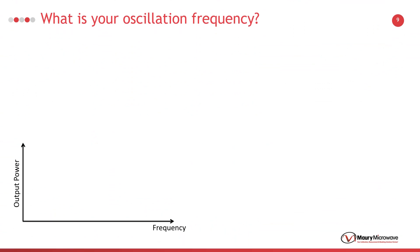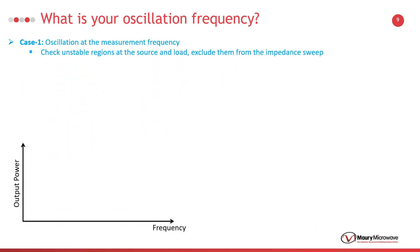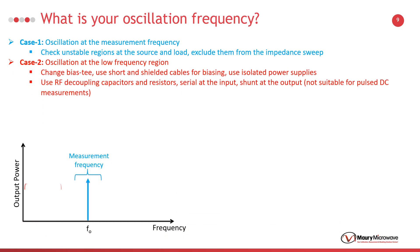If your DUT is oscillating and you know the oscillation frequency, we have some recommendations that may fix your problem. The first case is oscillations at your measurement frequency. In this case, you might be performing source pull or load pull in the unstable region of your DUT. An S-parameter measurement before the load pull measurements can be used to understand unstable regions. Then you can exclude these impedance values from your impedance sweep. The second case is low frequency oscillations, which means up to a few hundred megahertz. These oscillations are usually caused by the biasing networks. As a fast solution, you can check your biasing networks, change bias tees, and use additional resistors and capacitors on the biasing lines.